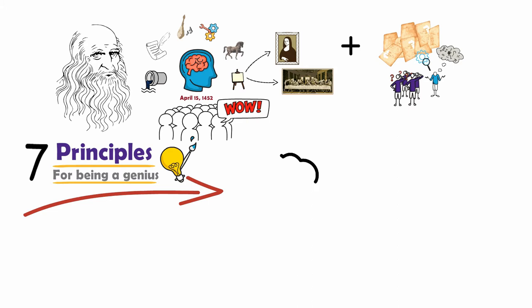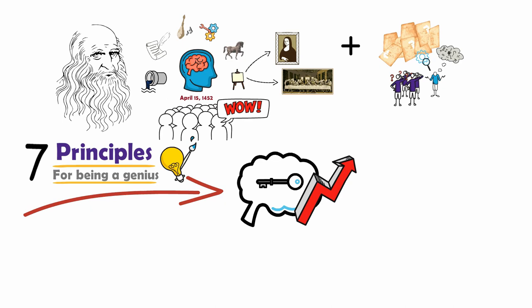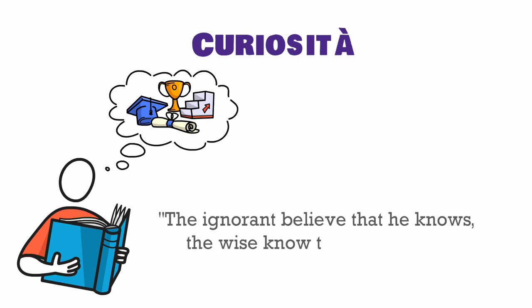Applying these principles in your life will help you cultivate your intelligence, leading you to develop your highest potential. Curiosità: Maintain a learning attitude, approach life with insatiable curiosity, and seek continuous learning. The ignorant believe that he knows; the wise know that he ignores. Be wise.